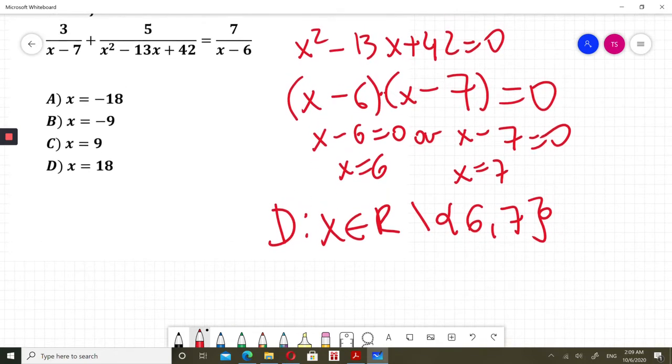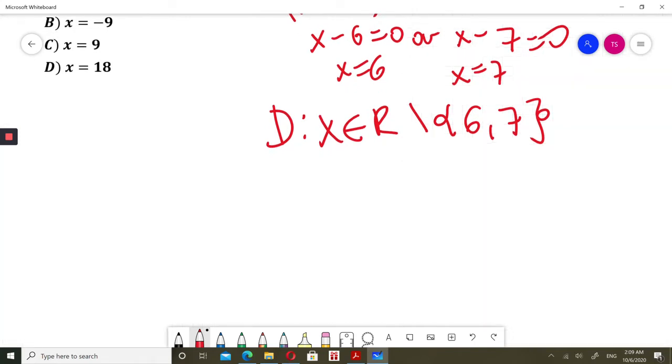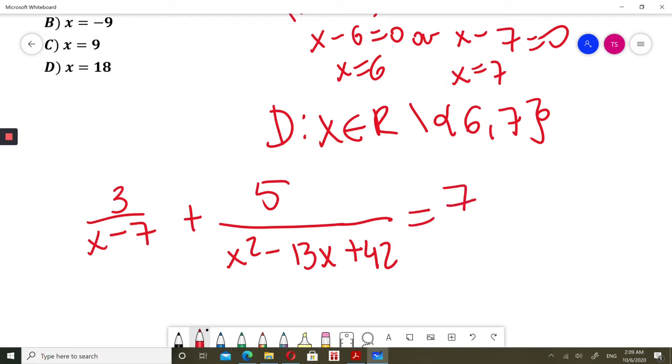Now solving this equation. I will write it maybe again. 3 over x minus 7 plus 5 over x squared minus 13x plus 42, and that equals 7 over x minus 6. What I will do is multiply all three terms by the least common denominator. So I multiply every term by x minus 6, x minus 7.